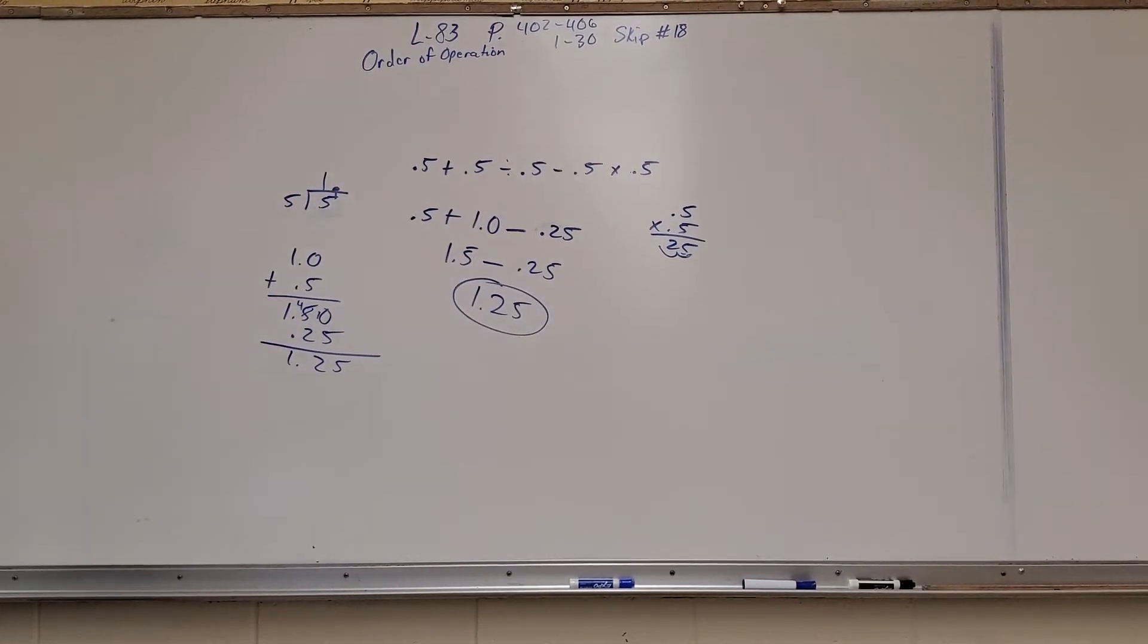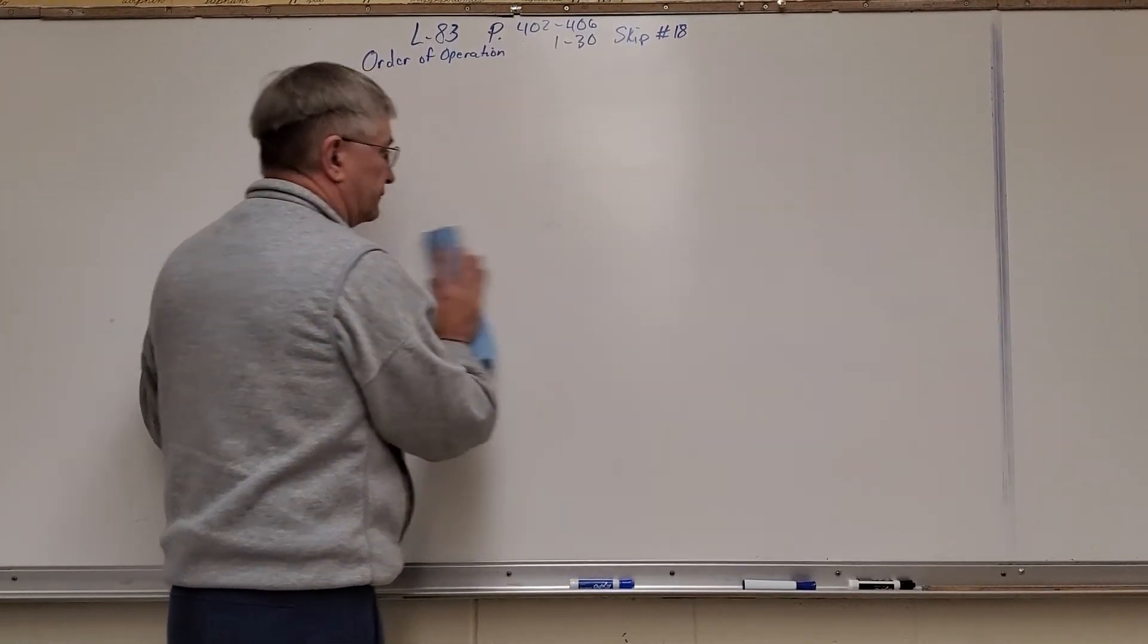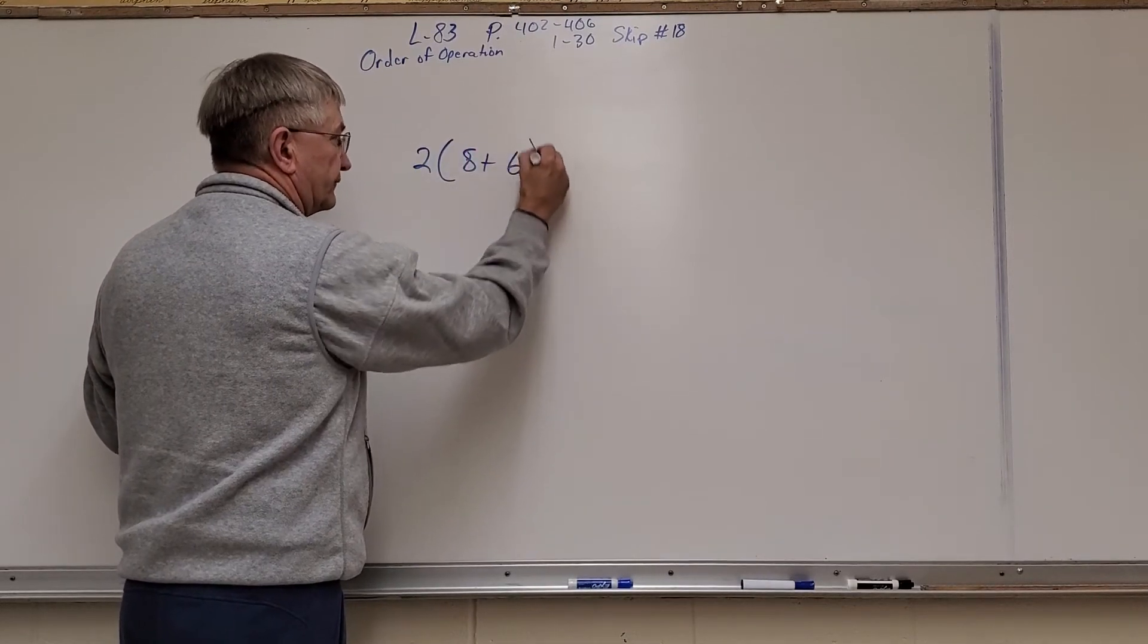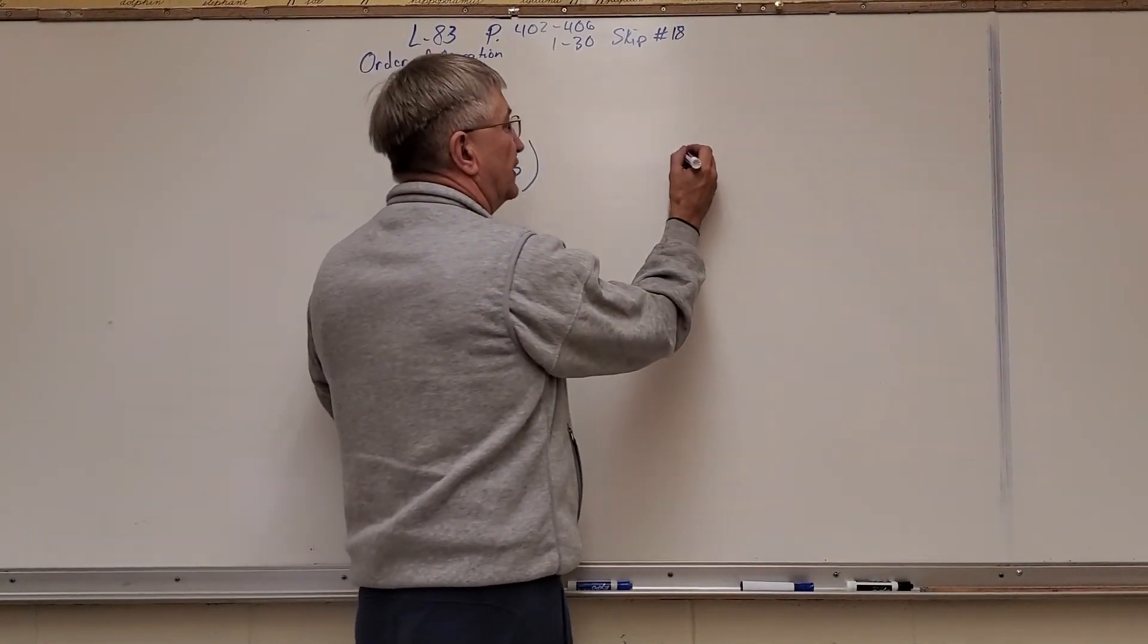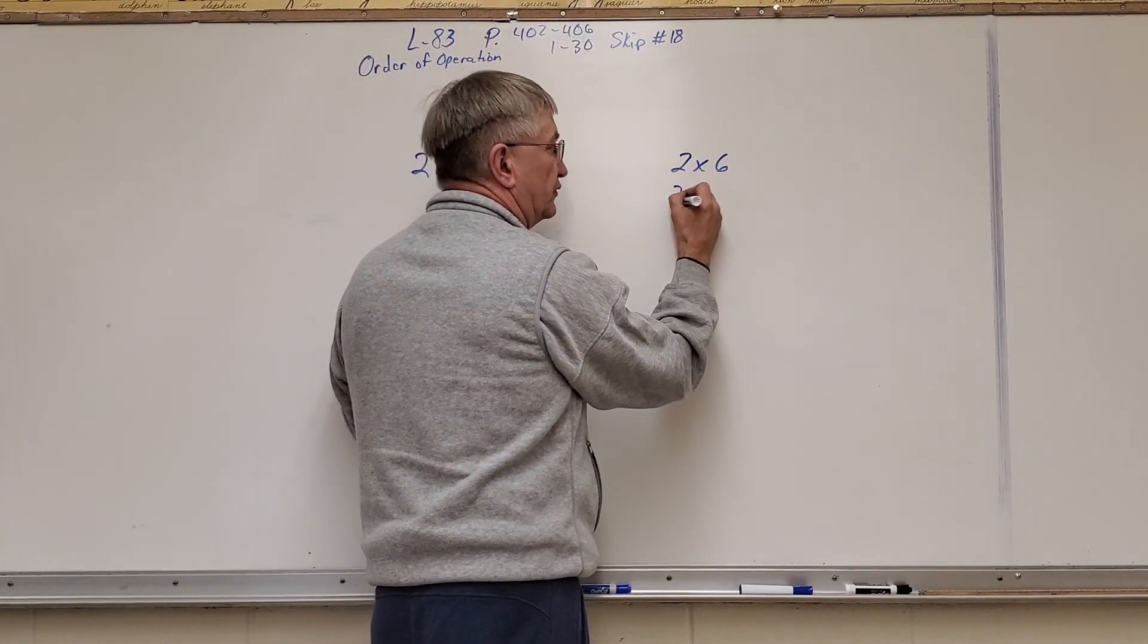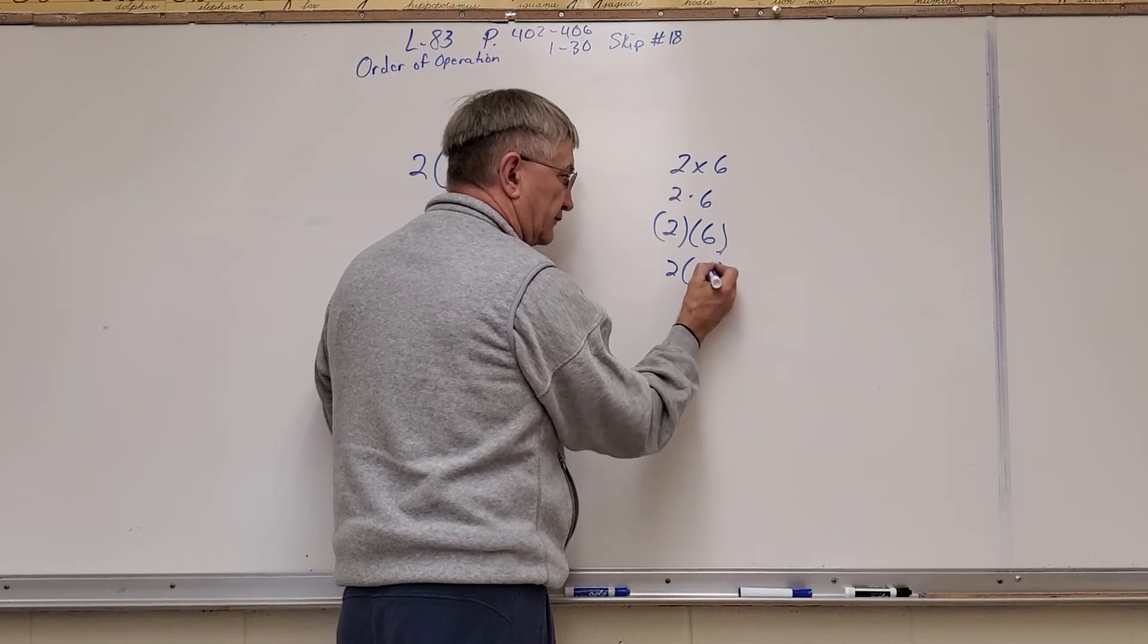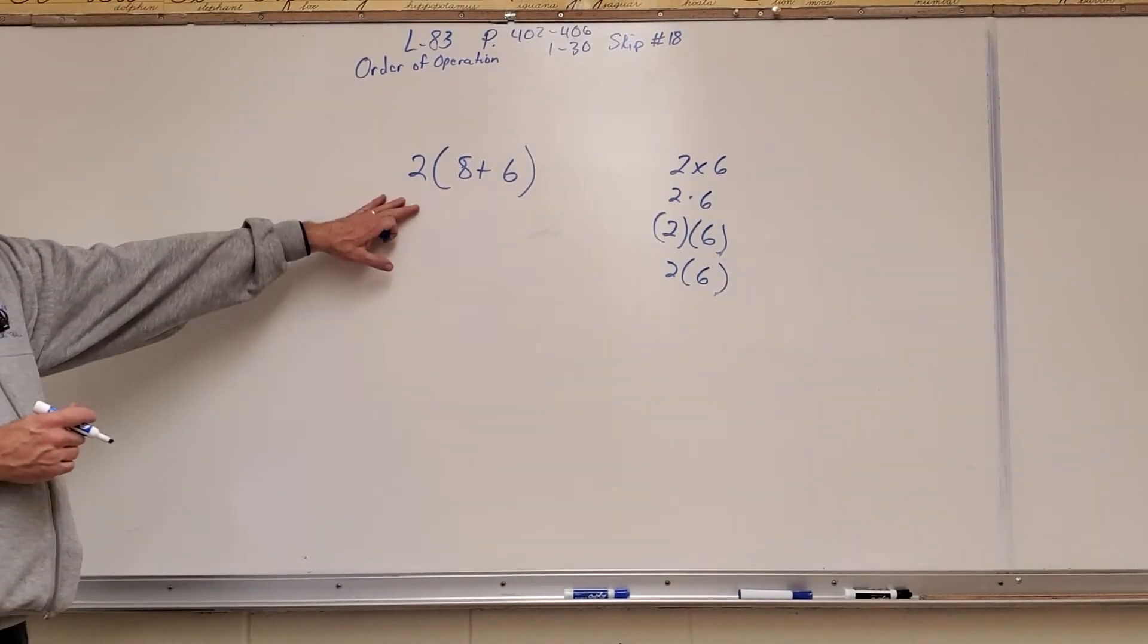This is going to involve parentheses. So I'll erase this. And parentheses, here we come. Now, we have 2, parentheses, 8 plus 6. Alright, now, remember, we also said that there's several ways to write multiplication. We can go, if we say 2 times 6, we said you can go 2 times 6. And you can also go 2 times 6. And you can also go 2 times 6. You can do all those mean multiplication. It's fair game. So that's really what we're setting up here.